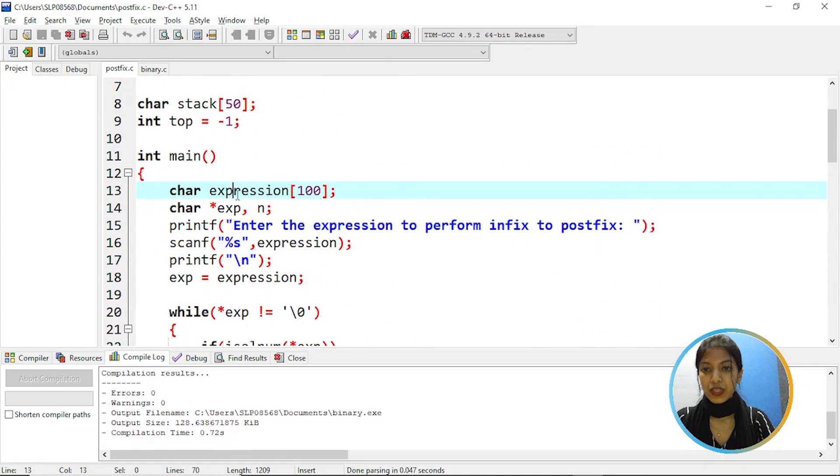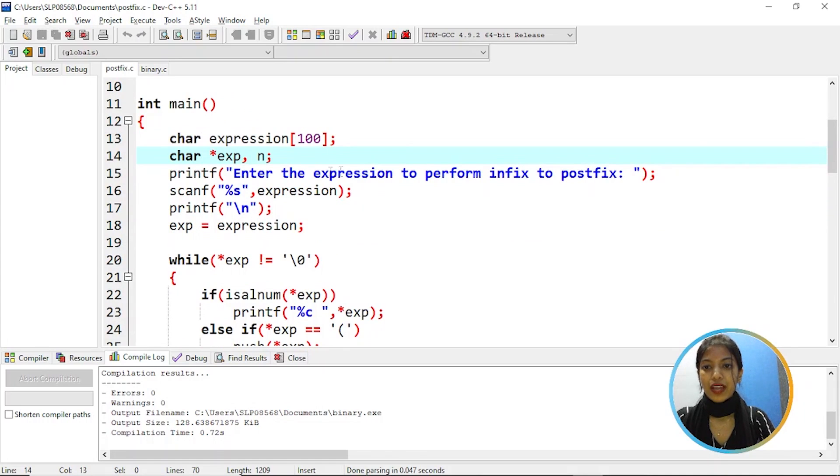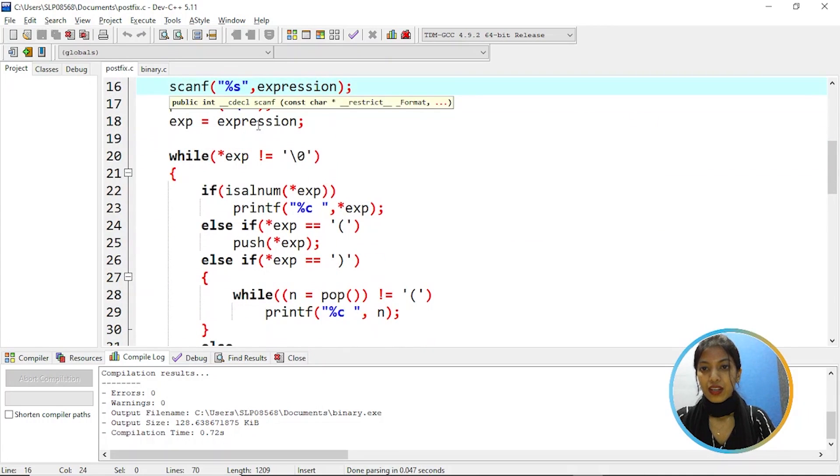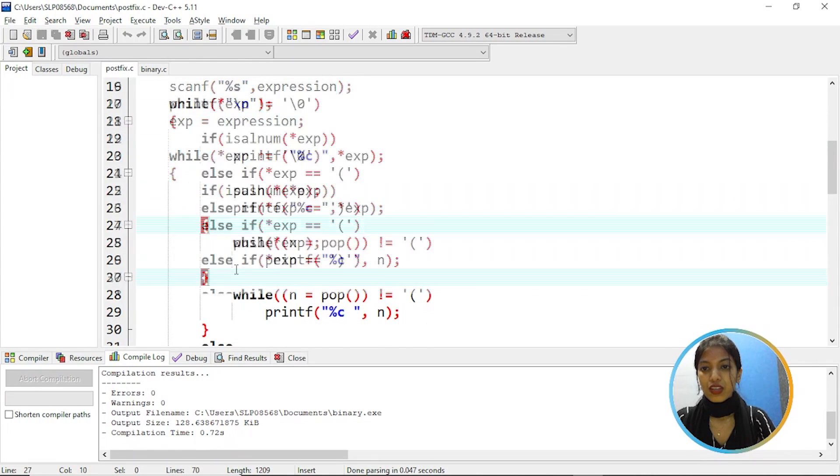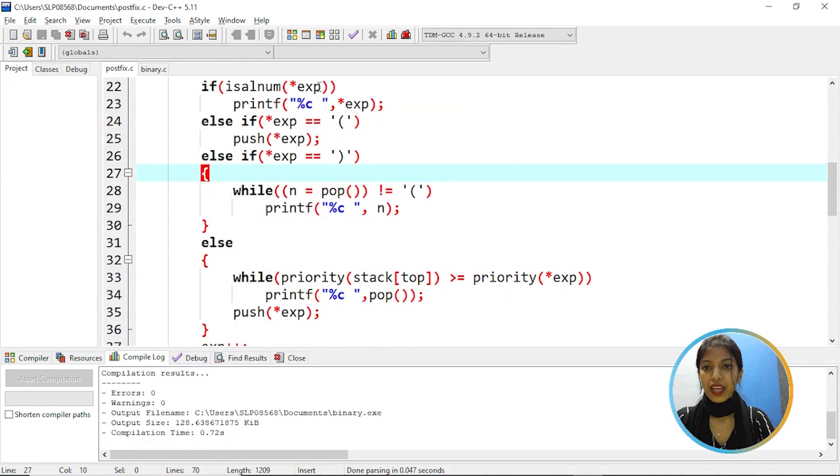Here we have the expression of size 100 and then the pointer variable exp. Then asking to enter the expression to perform infix to postfix. Once you enter the expression is assigned to exp. So while exp not equal to null then checks the condition.